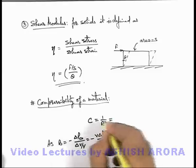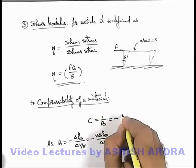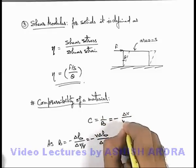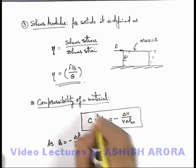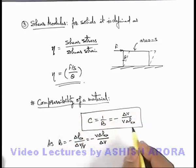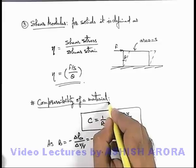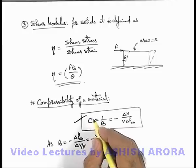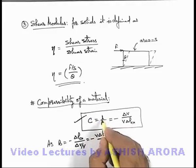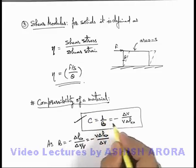So its reciprocal is given as compressibility which is negative of delta V by V delta P excess. So this also you should keep in mind because in several different numerical applications compressibility of a material is asked. So whenever compressibility is required we just take it as reciprocal of the bulk modulus of the material.